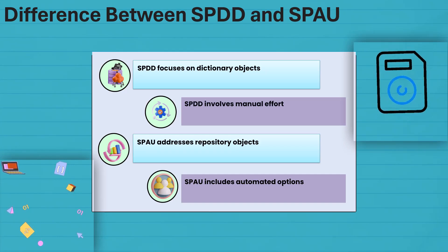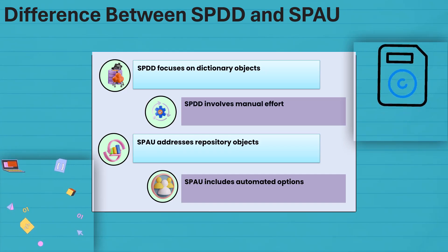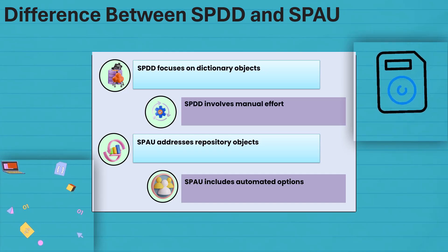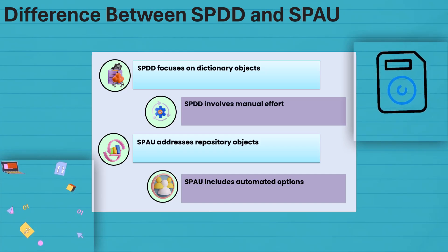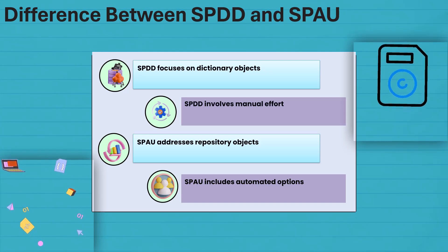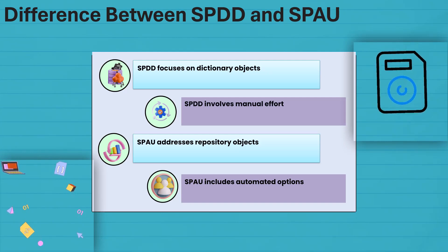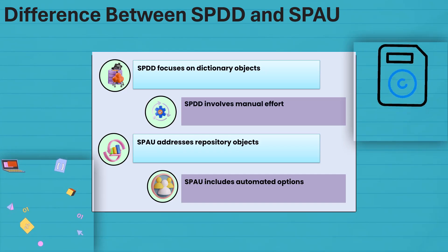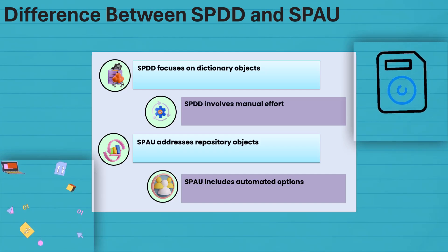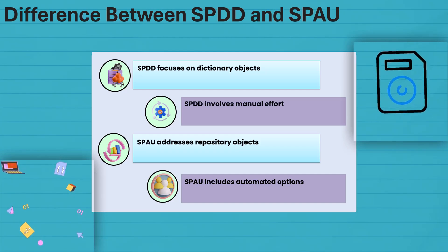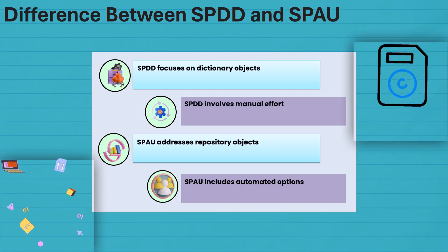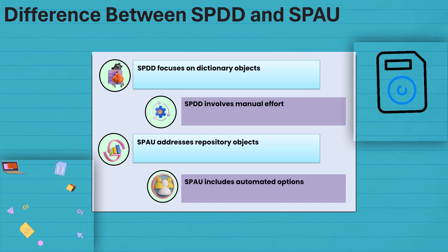Understanding SPDD and SPOW is crucial. They're like two superheroes with different powers. SPDD handles dictionary objects and manual adjustments, while SPOW is the go-to for repository fixes. Together, they ensure a smooth update process.